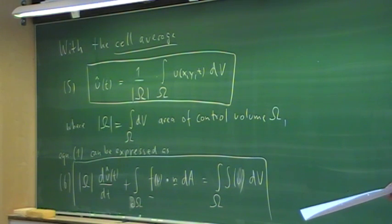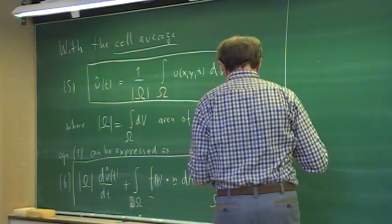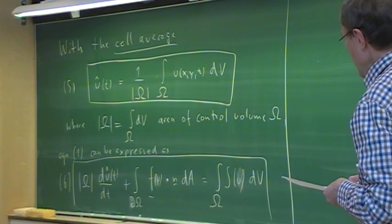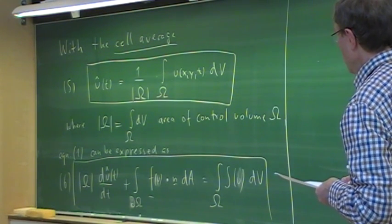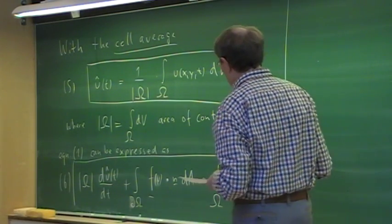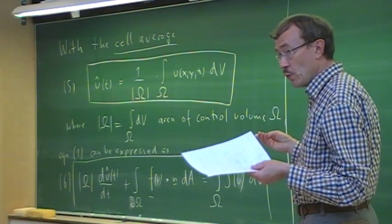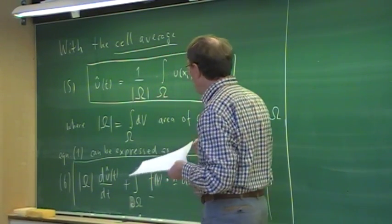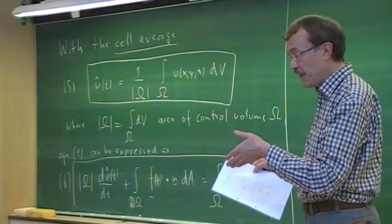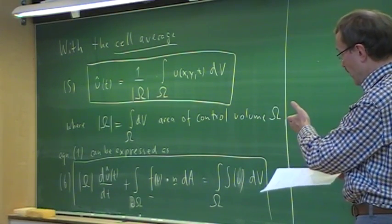The reason we introduce the cell average is that in the finite volume method, we do approximations of the cell averages, as we did for the 1D case, and we do that also in 2D. Our task is to give approximations for the cell averages. The problem we will have — like in 1D — is to determine the fluxes, because for the fluxes we would need to know the exact solution on the boundary. We usually don't know that, so we have to do approximations to replace the physical fluxes by numerical ones.